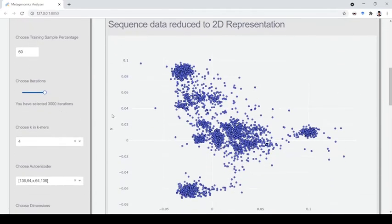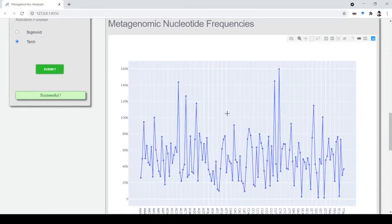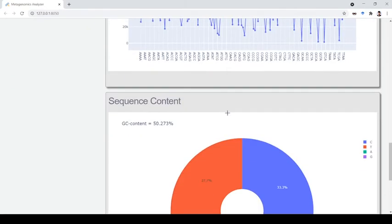What you see here is the autoencoder trend, the output of an autoencoder trained for the Atlantic right whale gut metagenome obtained from NCBI. This graph shows the k-mer frequency percentages and this is the GC content pie chart for the sample.